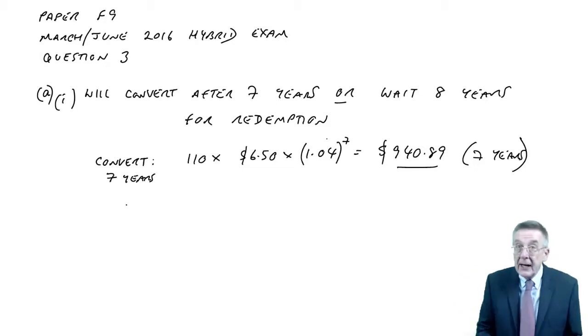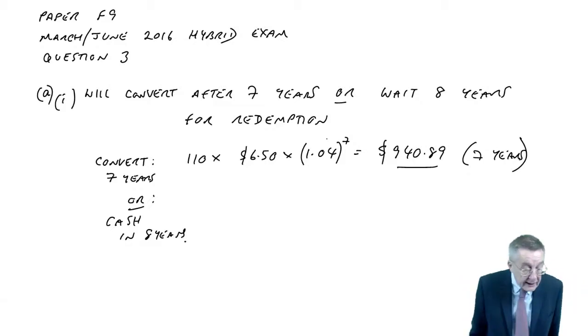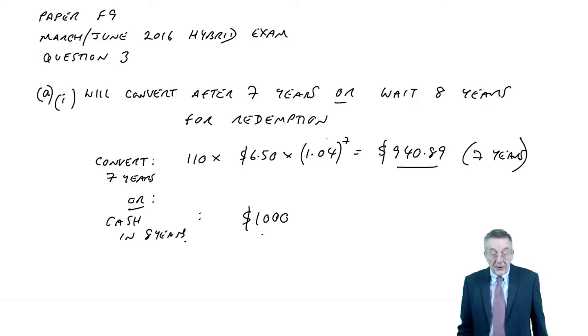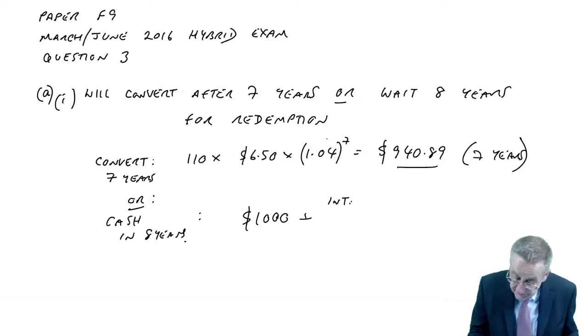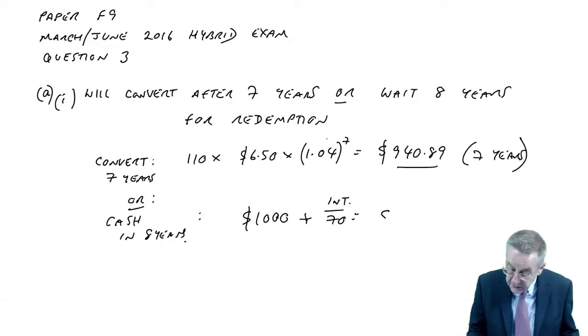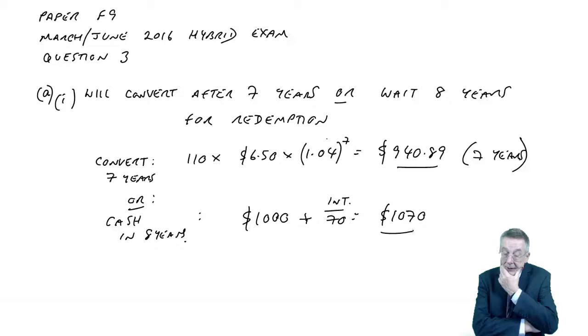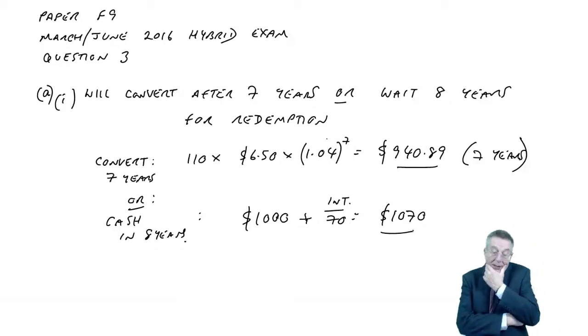The alternative, because we need to decide what they'll be expecting to do, the alternative will be to take cash in eight years. How much will they get? It's redeemable at the nominal value, so they'll get $1000. And if they keep them for the extra year, converting at seven years ends the story, but if they keep for the extra year and take the cash, they'll also get interest in that eighth year. The interest is 7% on nominal, so they'll get $1070 waiting that extra year. So what will they expect they'll do? As of now, do they think they'll convert and take $940 in seven years, or do they think they'll wait and take effectively $1070 in eight years?